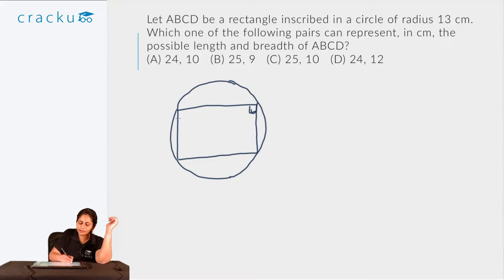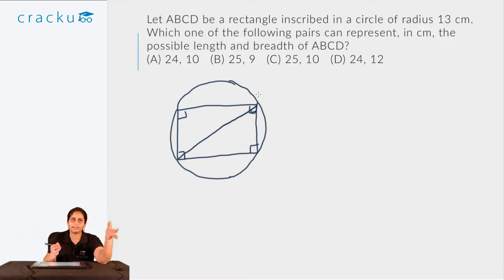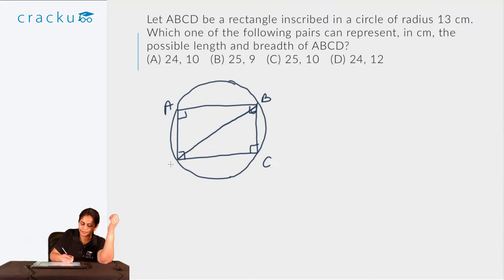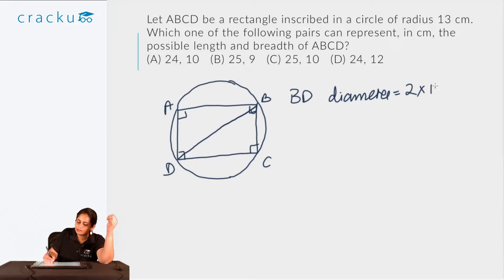All the angles of a rectangle are 90 degrees, and if you know the basic properties of a circle, you know that only the diameter subtends a right angle at the circumference. So if ABCD is a rectangle, then BD must be the diameter of the circle. The length of the diameter is 2 times 13, that is 26 centimetres.